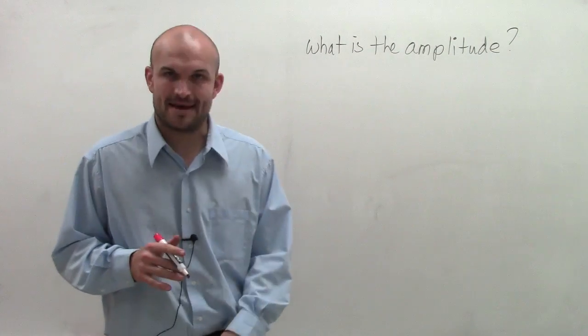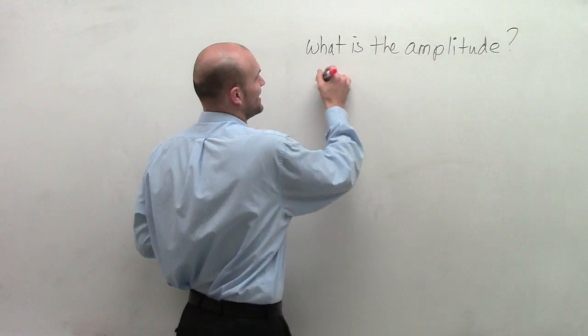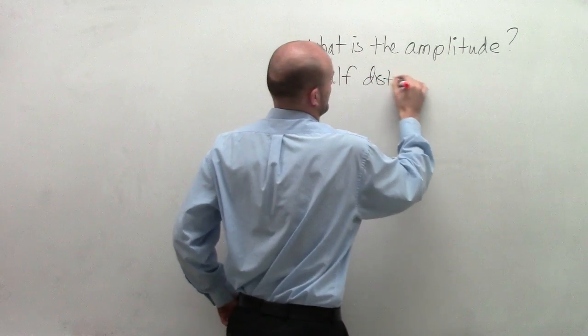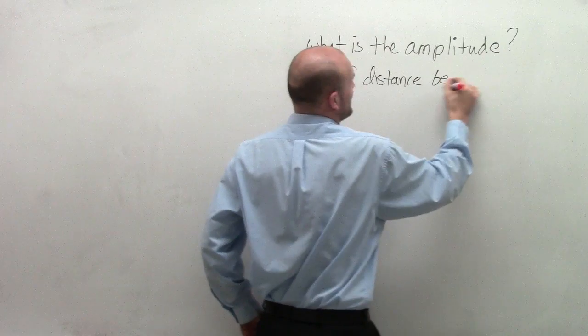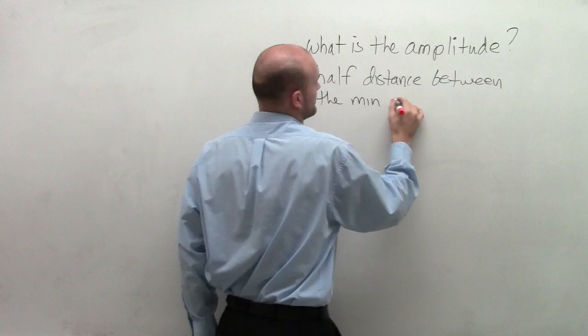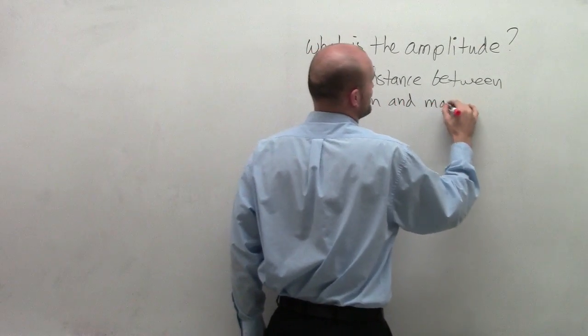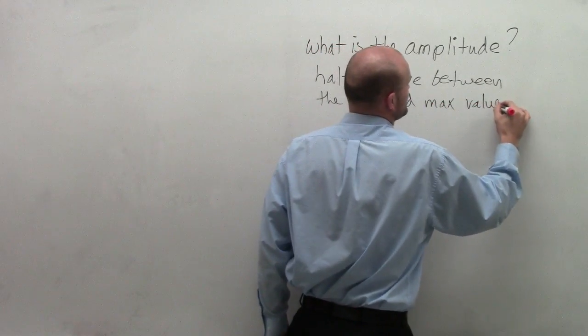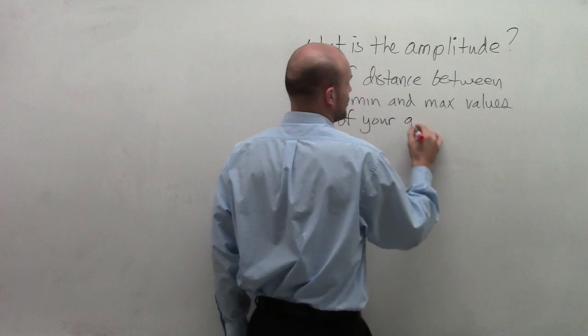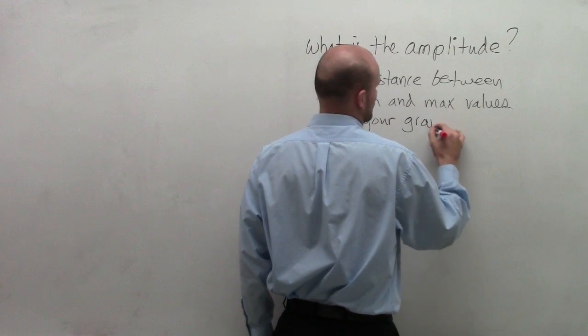So what exactly is the amplitude? The amplitude is the half distance between the minimum and maximum values of your graph or of your output functions or output values.